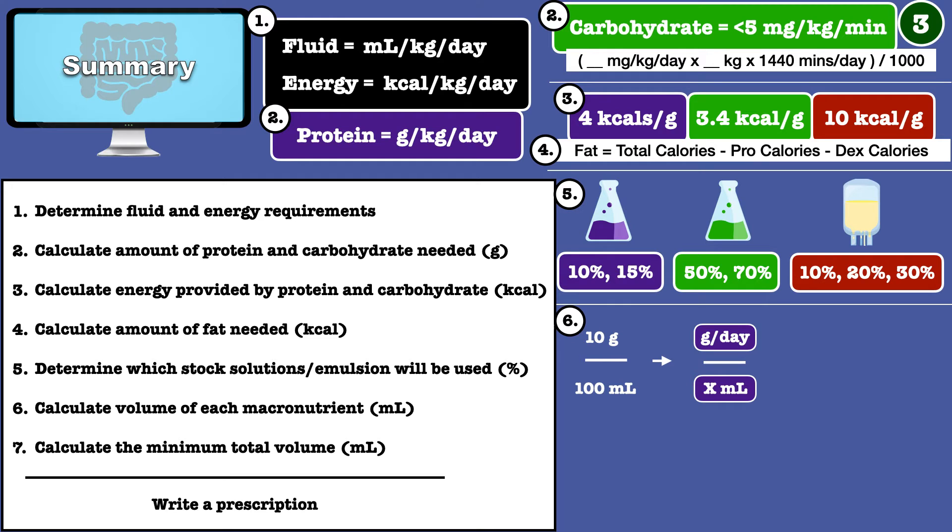The concentration of the solutions gives you the grams per 100 milliliter. For example, a 10% amino acid solution contains 10 grams of protein per 100 milliliters.